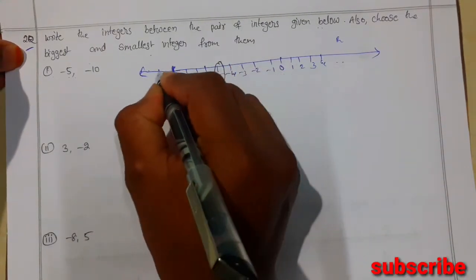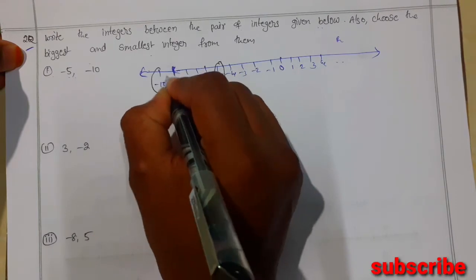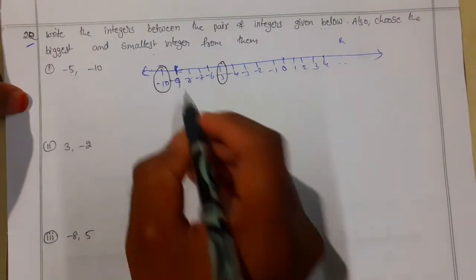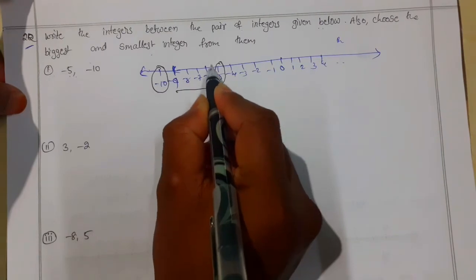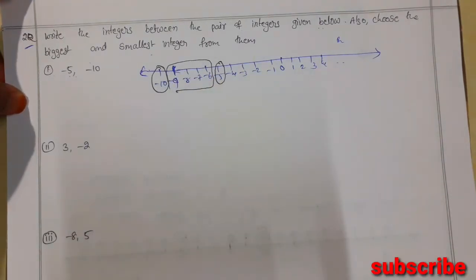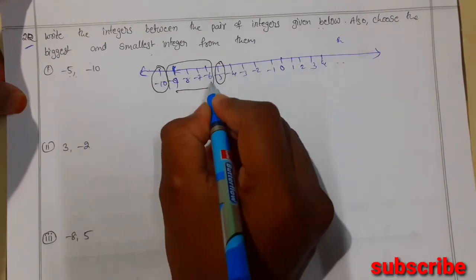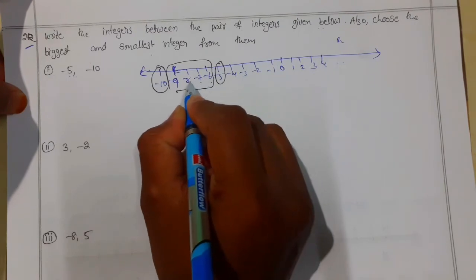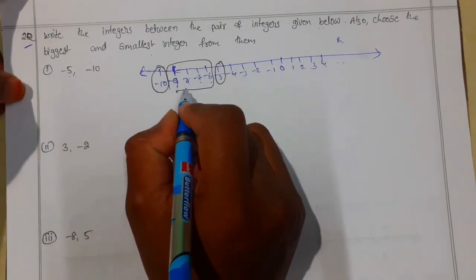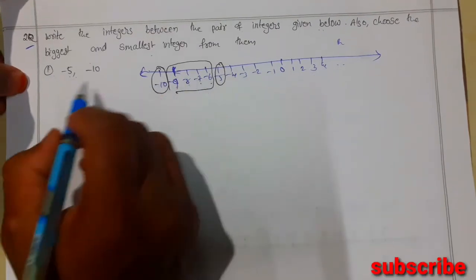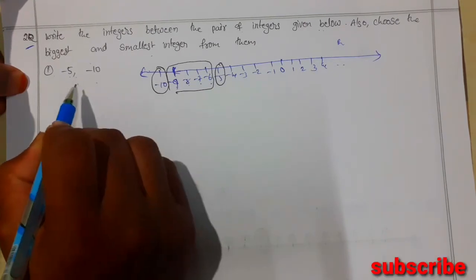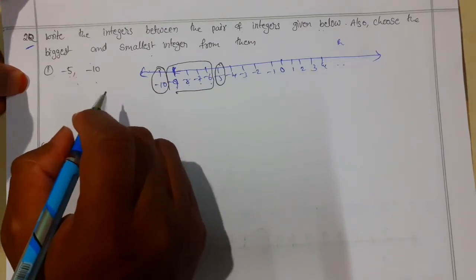Now let me mark the two numbers given to us: minus 5 and minus 10. The numbers which lie in between these two are minus 6, minus 7, minus 8, and minus 9.